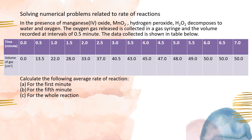Next, calculate the average rate of reaction for the first minute. The volume of gas collected at the first minute is 22 cm³. The time taken is 1 minute. So 22 over 1 equals 22 cm³ per minute. Spell out the unit: M-I-N-U-T-E to the power of negative 1.